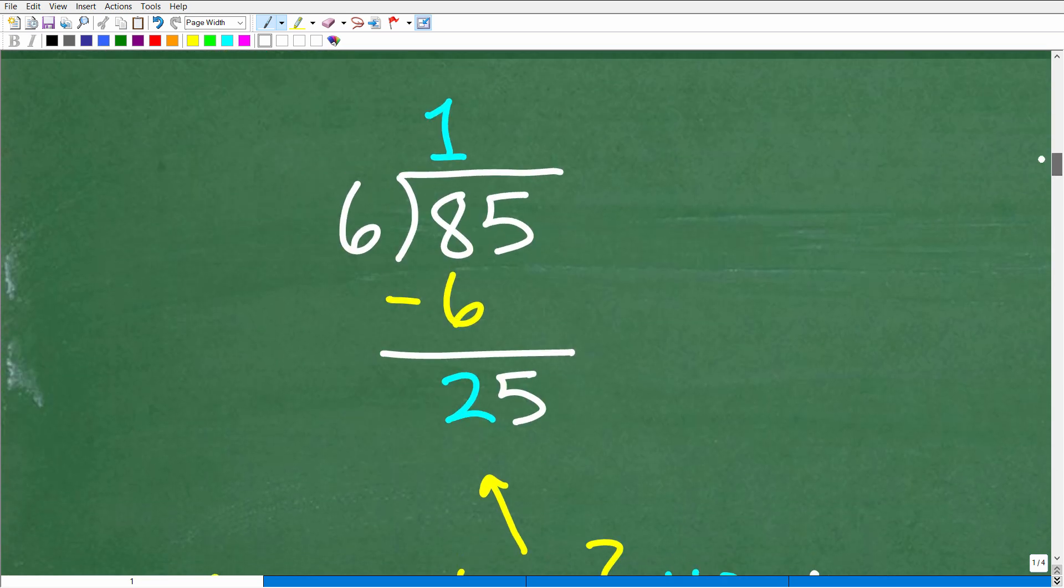So now let's continue on. What do we need to do? We have 8 minus 6. So we need to do this little math right there. 8 minus 6, of course, is 2. So now we're at this stage of the problem.